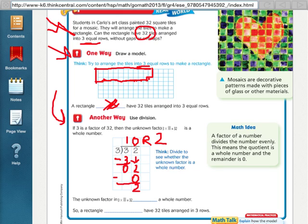So, since I have 10 remainder 2, that means it cannot be in 3 equal rows. Down here it says the unknown factor in 3 times blank equals 32 is not a whole number. It's not a whole number. We have a remainder. So, a rectangle cannot have 32 tiles arranged in 3 rows. That's two different ways to find out if a number is a factor of another number.